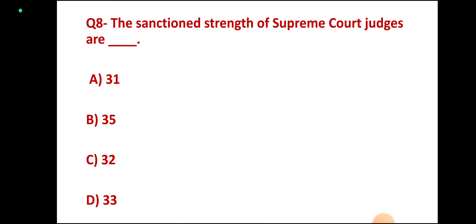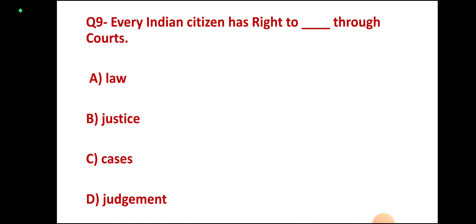Question 8: The sanctioned strength of Supreme Court judges is — 31, 35, 32, or 33? Correct answer: 31.